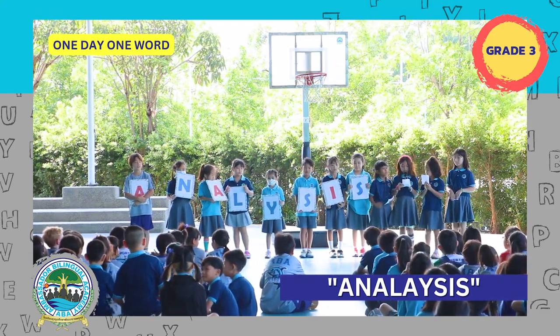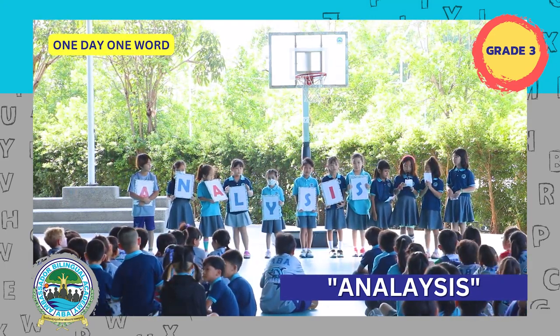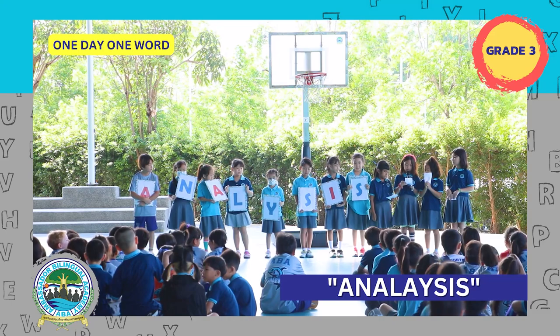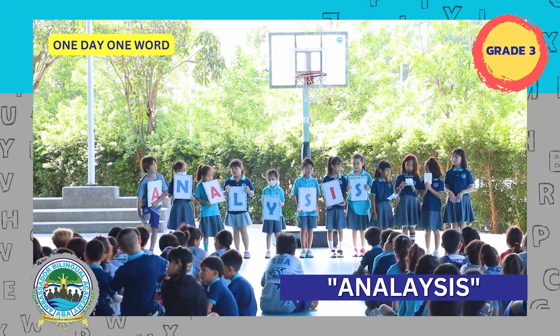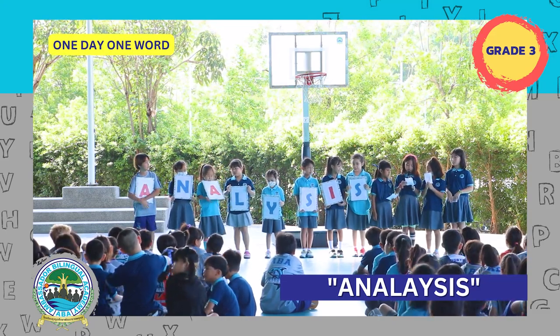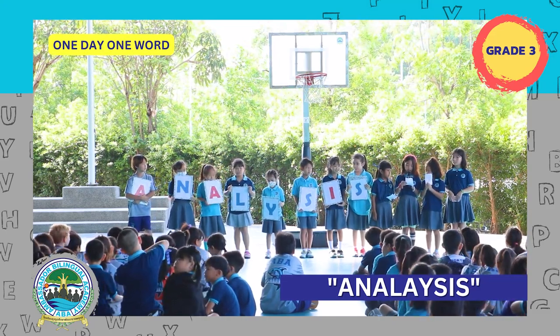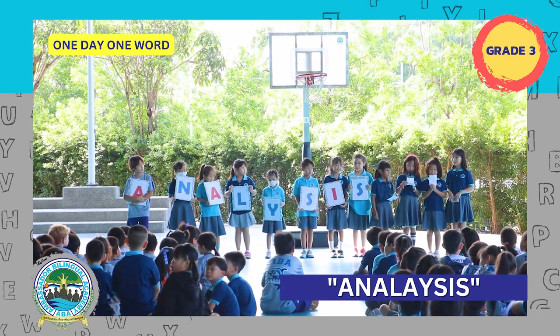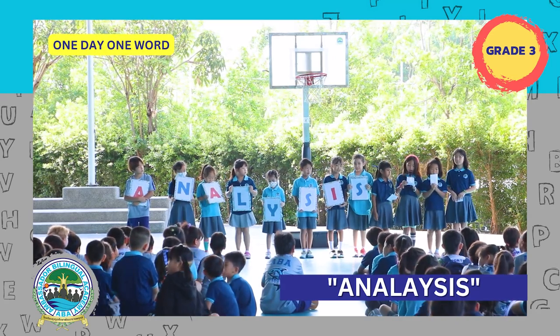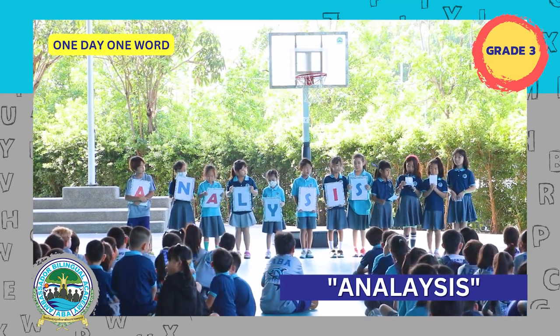One example of analysis is the behavior of ants in the garden, by observing where the ants go, what they carry around, and how they interact with each other.